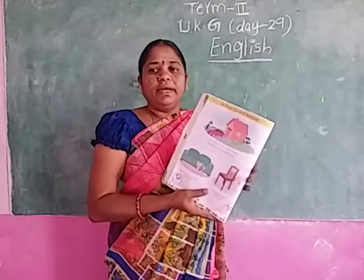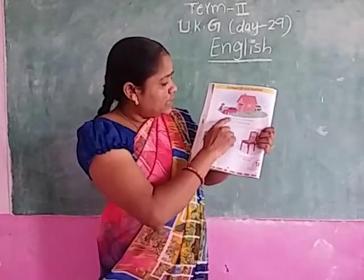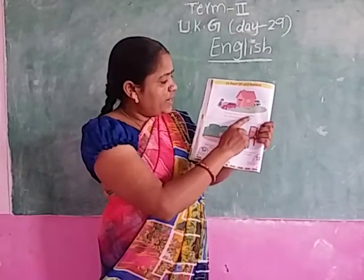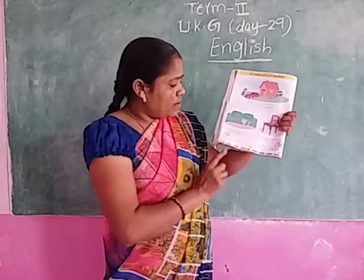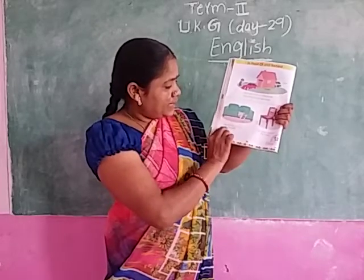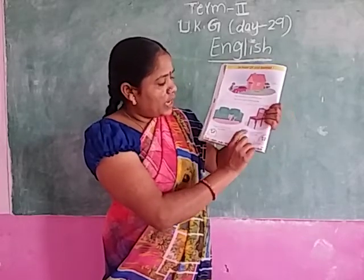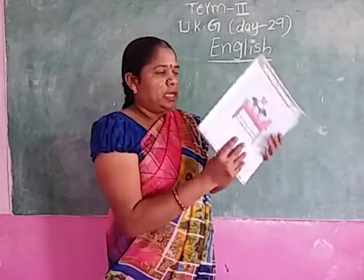In front of and behind. The car is in front of the house. The van is behind the house. The cat is in front of the sofa. The dog is behind the chair.